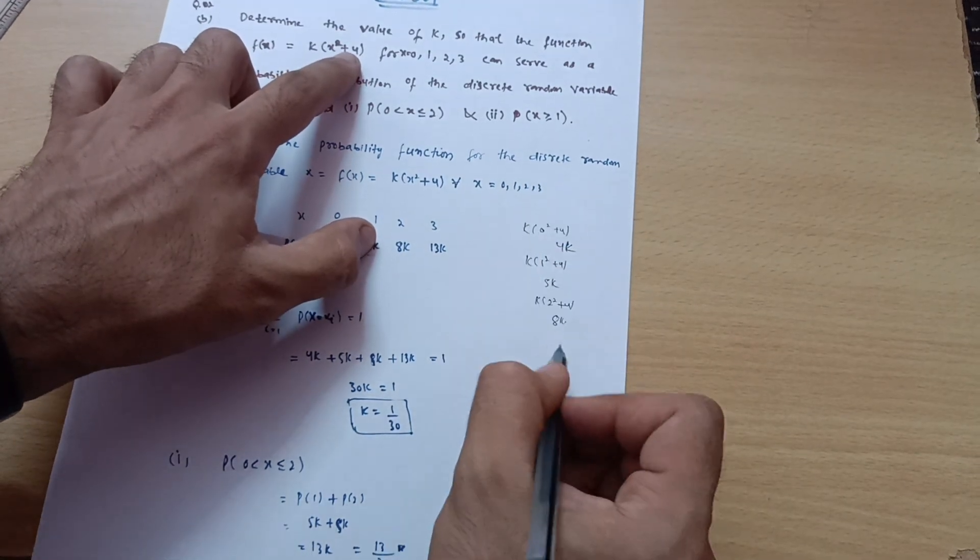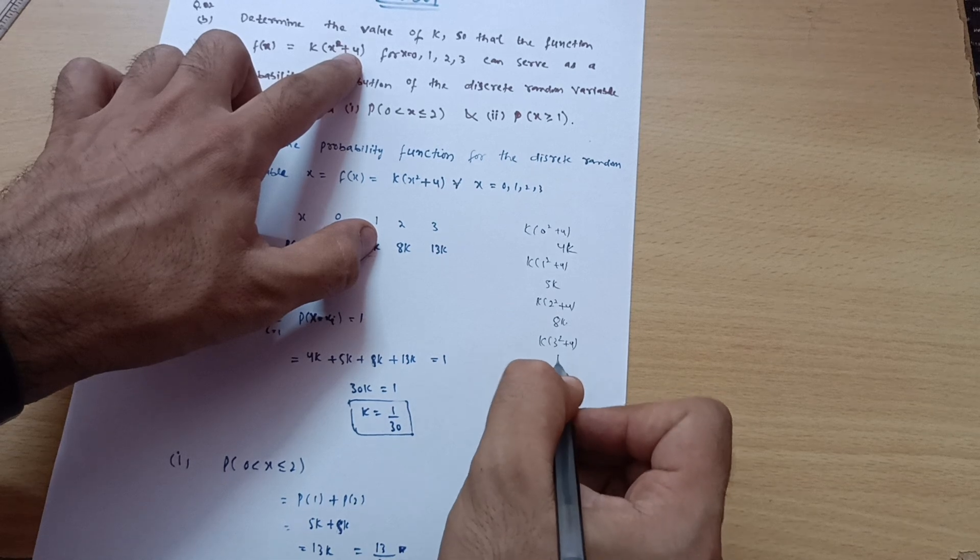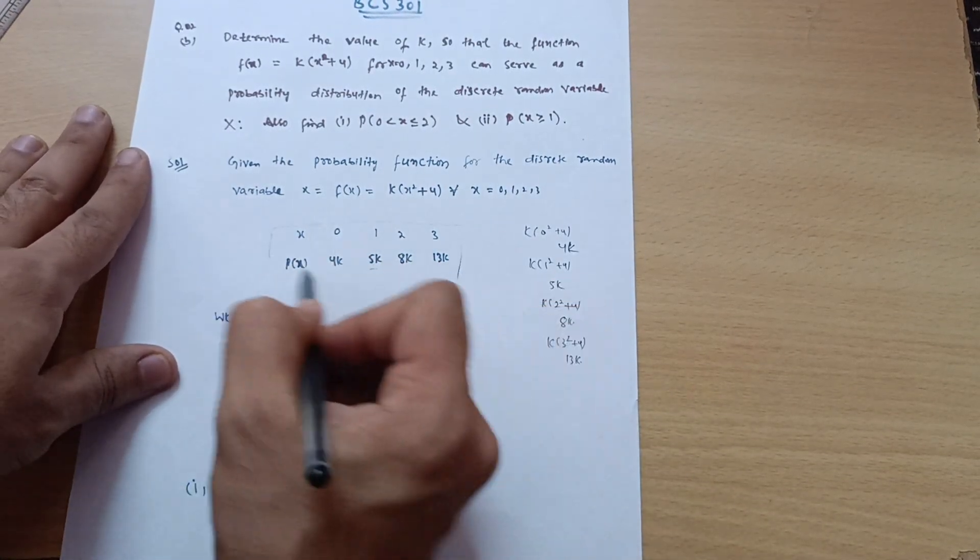Now take the value as 3. So k(3² + 4), this is 9 + 4 = 13k. That is what I have written here. This is your probability distribution table now.